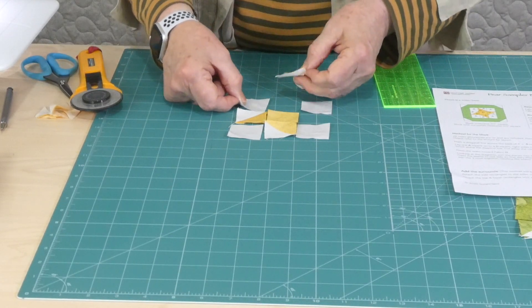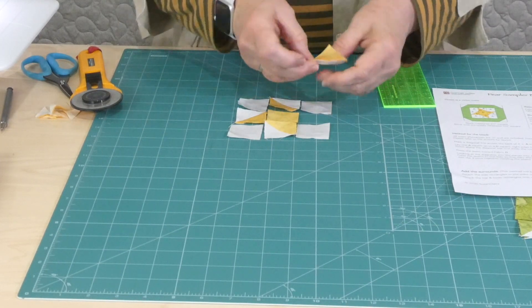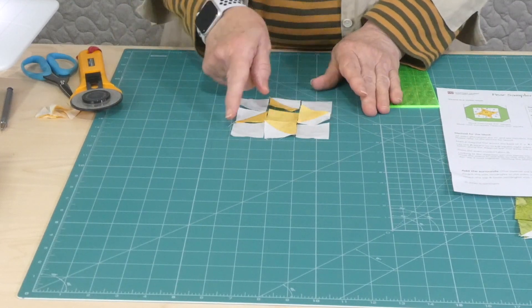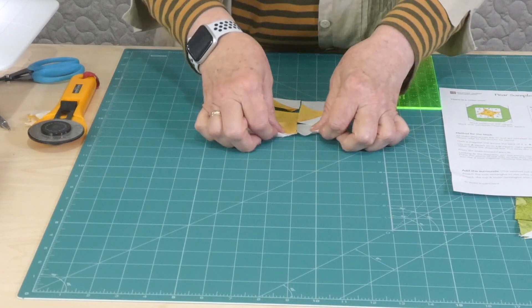Oops, and I'm going to get it around the wrong way. It wants to go that way and that way. So now we just need to join up the three little rows of three squares like we do for a nine patch.